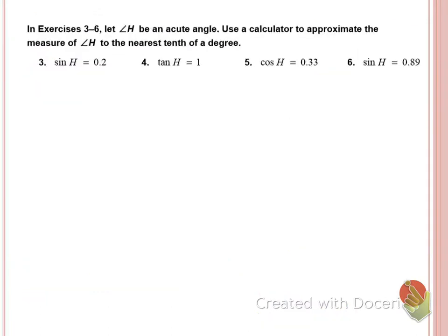So the bottom section, let angle H be an acute angle. Use a calculator to approximate the measure of angle H to the nearest tenth of a degree. This does not require showing any work. You just use the inverse in your calculator. So sine of H equals 0.2. So you want to use the inverse of sine to get H by itself. So shift sine of 0.2. And what do we get? Round to the nearest tenth. That's 11.5. You don't have to write the word about.